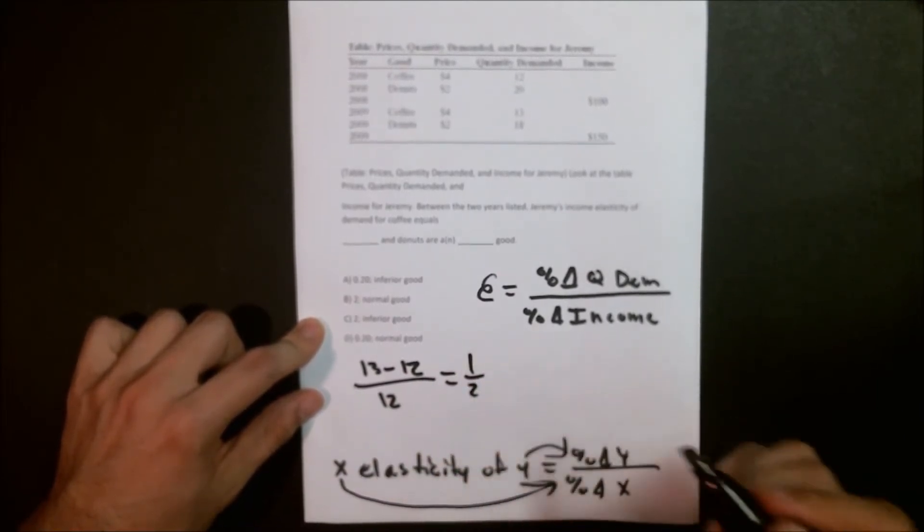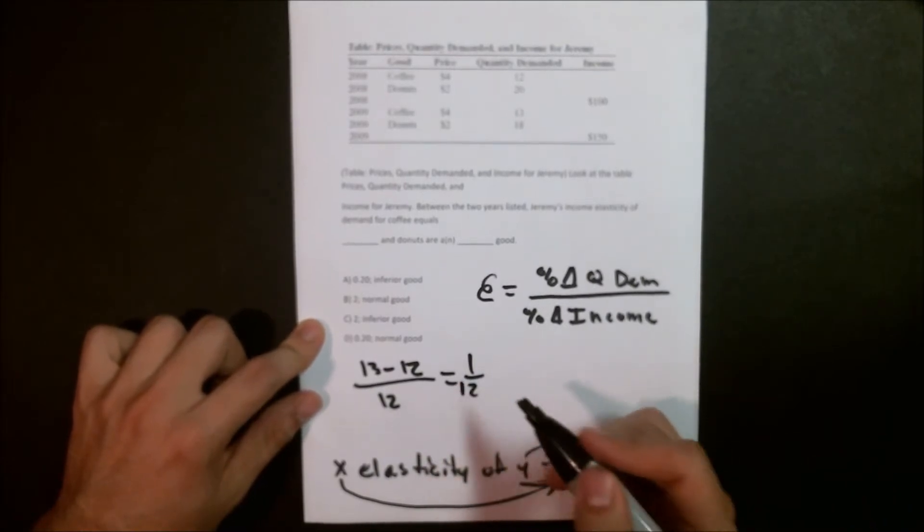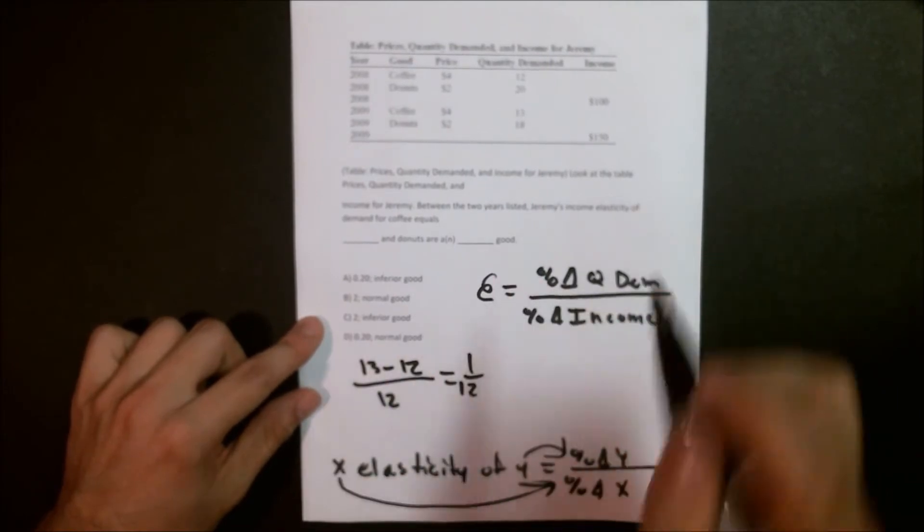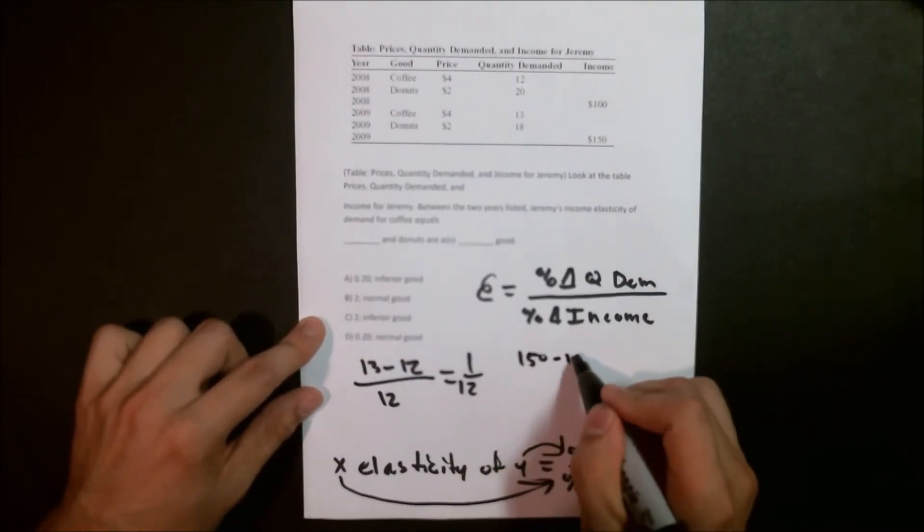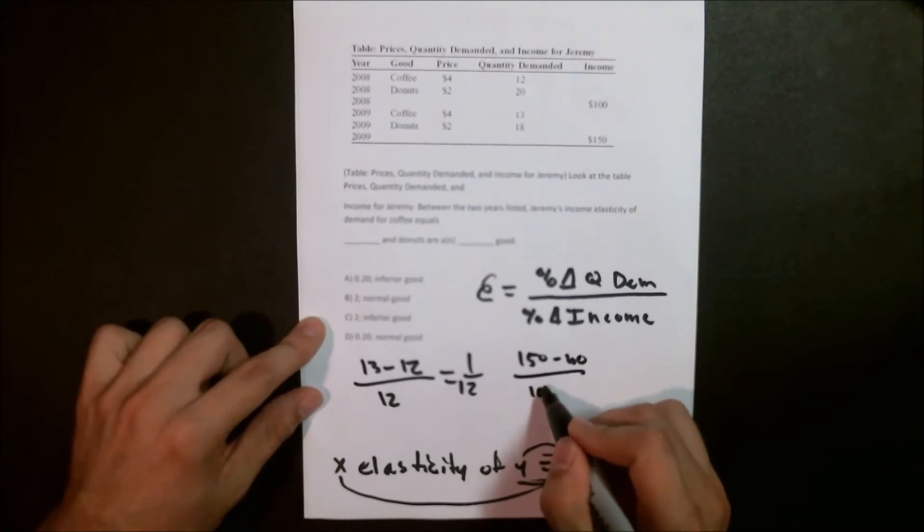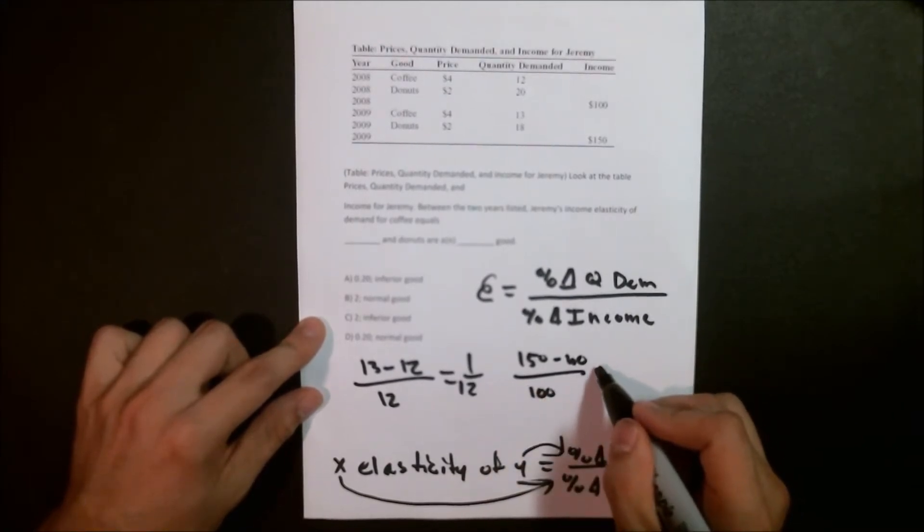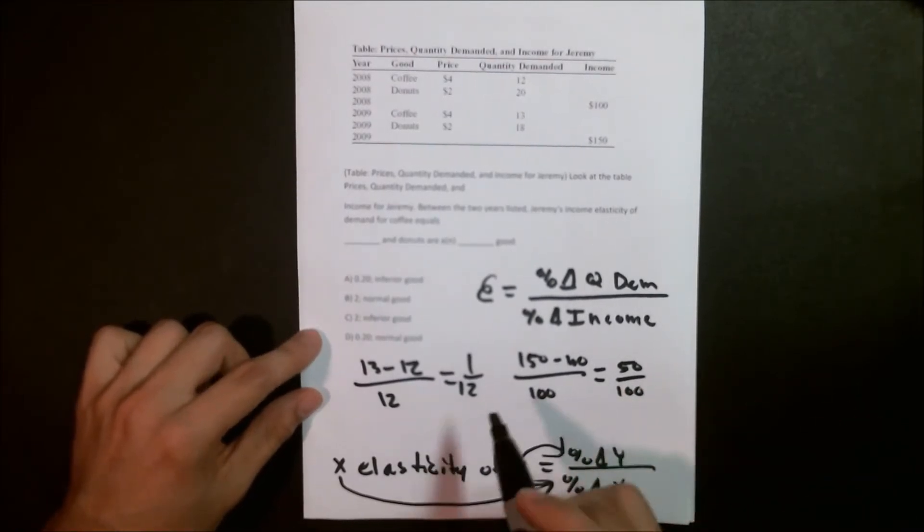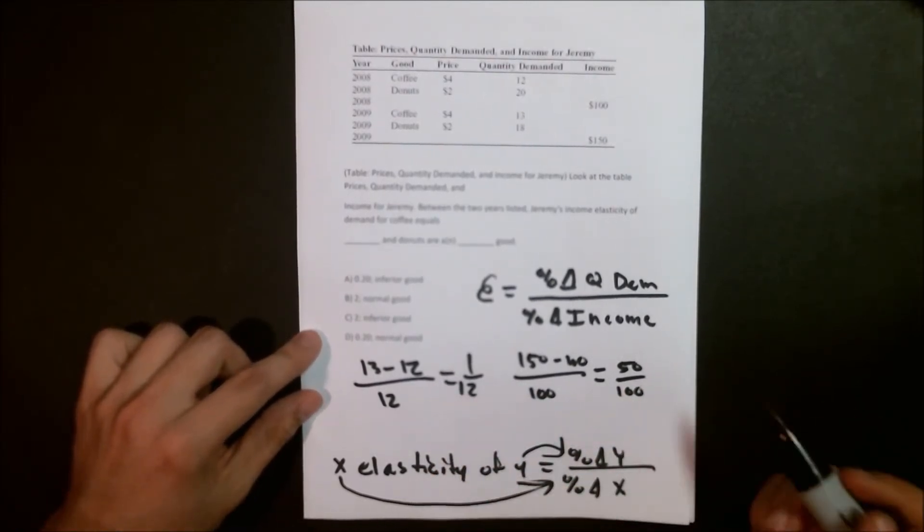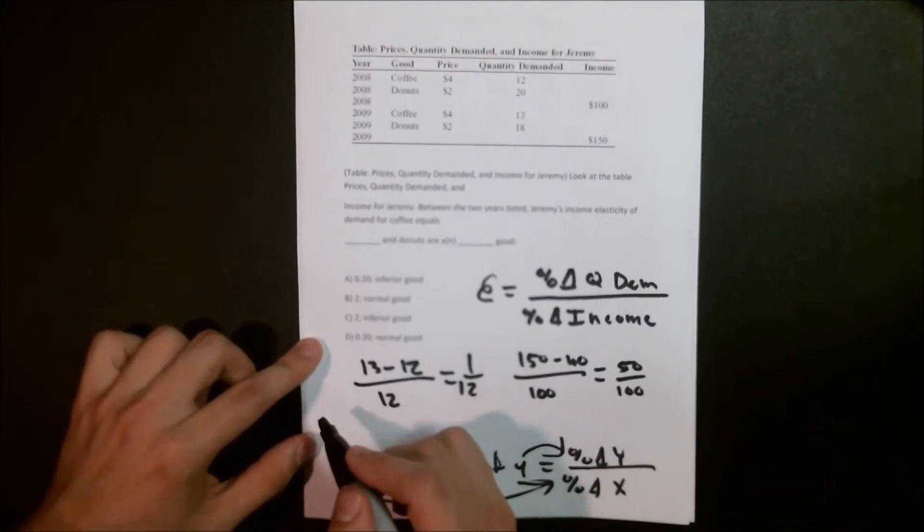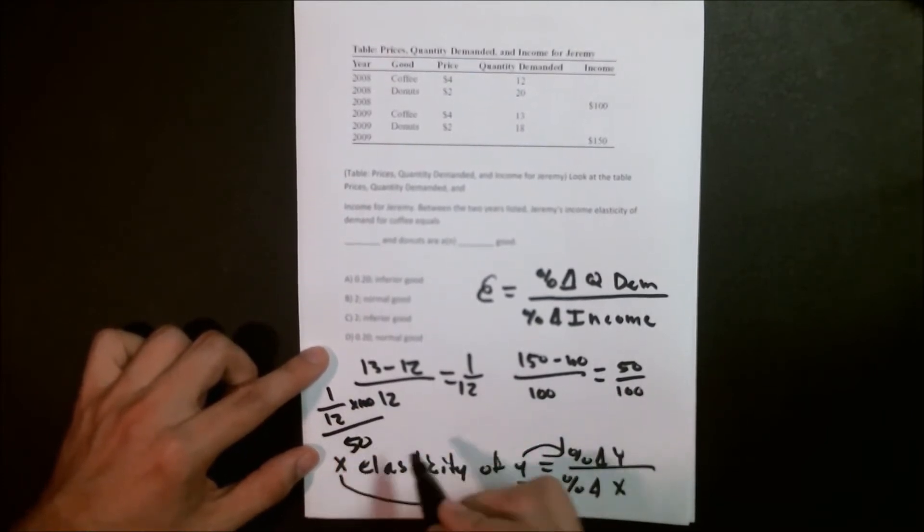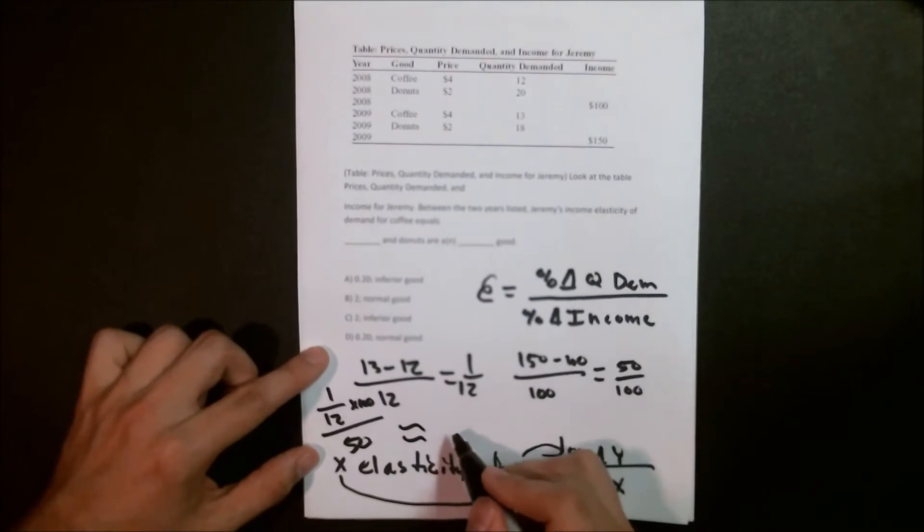We'll get 1 over 12. We're going to have to do the same exact thing, except for his income. 150 minus 100 over the base year equals 50 over 100. 1 over 12 is going to be a wacky percentage. 50 over 100, obviously 50%. So we're going to write that as 1 over 12 times 100 over 50, and equal about 0.17.